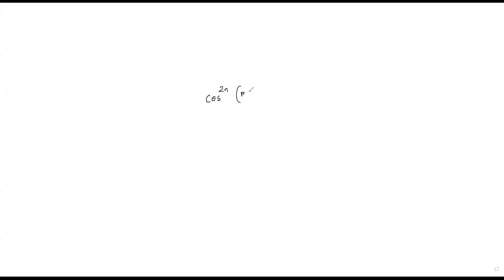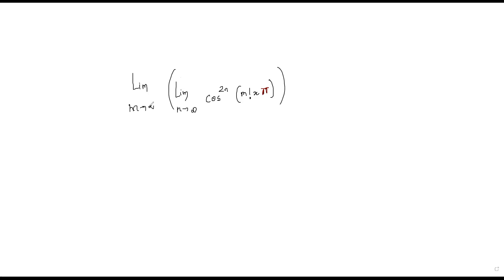Let me write the function properly. It's cos to the power N of M factorial times x times π. So the first limit is N tending to infinity — we calculate that inner limit. And then after this, you calculate the outer limit as M tends to infinity. So first N tends to infinity, meaning N is going to infinity.